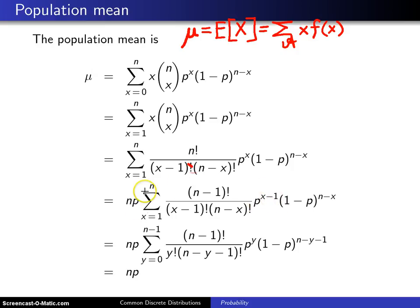Now going from this summation right here to this summation right here involves a substitution. If you let y be x minus one, then you'll notice first of all that the limits instead of running from one up to n, they now run from zero up to n minus one because of the shift by one.